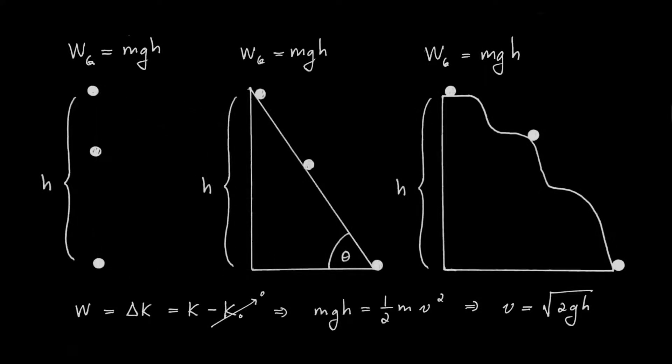By doing this exercise, I've discovered something remarkable. In each of the three cases, the work done by gravity is the same: mgh, mgh, mgh — a result I would not have initially expected. These three objects take remarkably different paths: the first goes straight down, the second goes down at an angle, and the third follows a crazy roller-coaster path. Yet the work done by gravity is the same, independent of path.